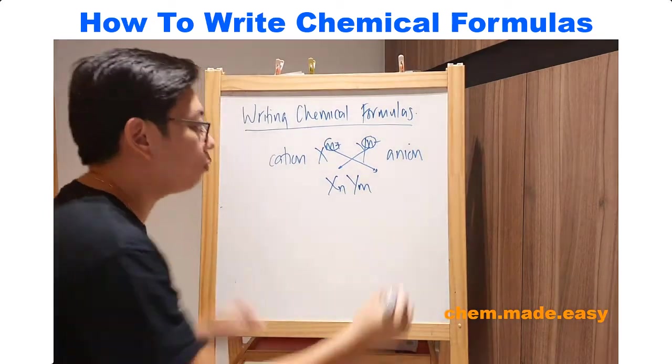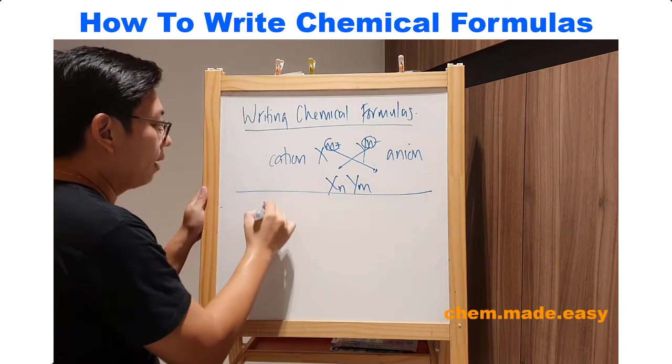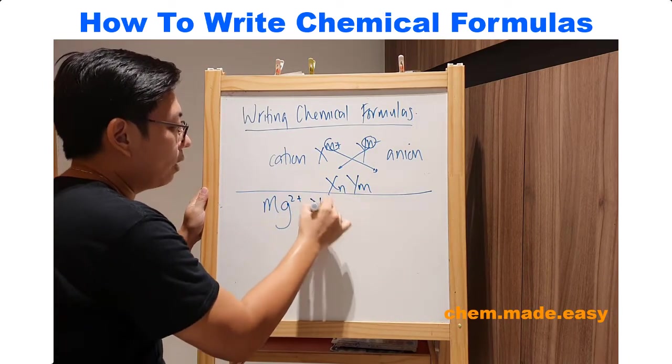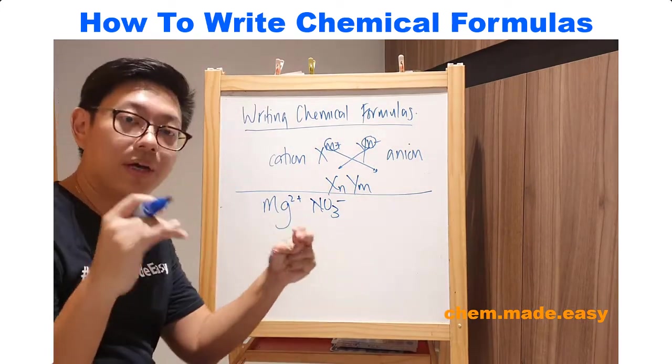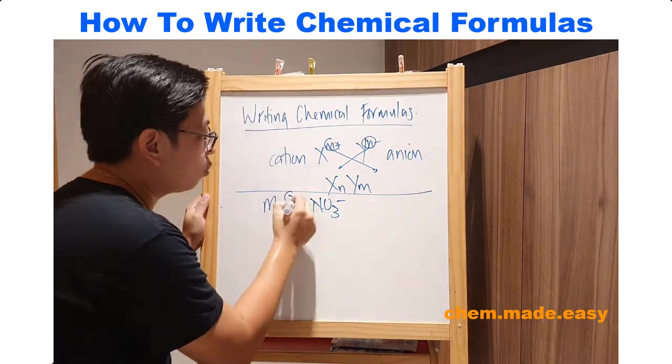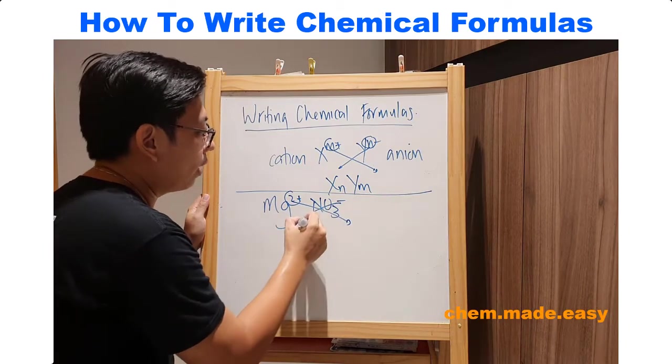Let's assume you have magnesium nitrate, Mg2+, nitrate, NO3-. Likewise, you want to take the number and cross it down, so you bring the number 2 on the outside, NO1 on the inside.